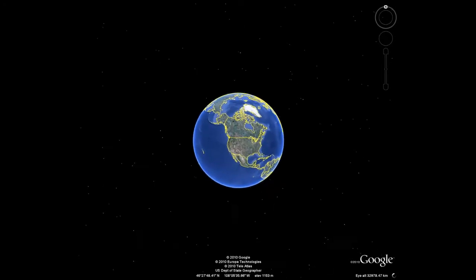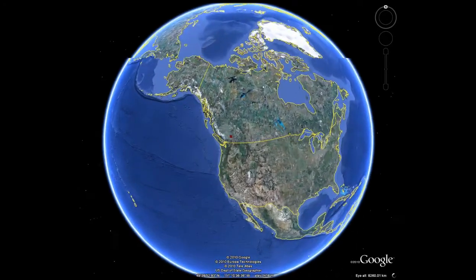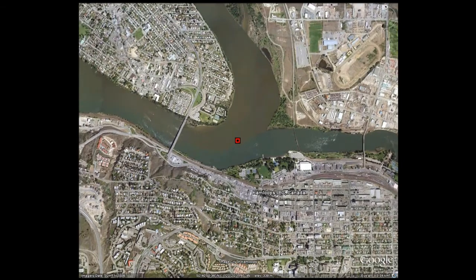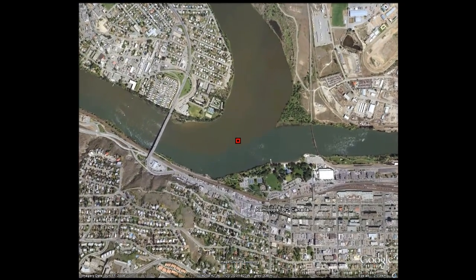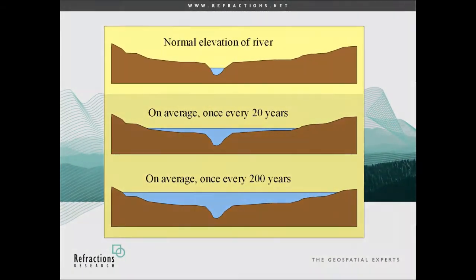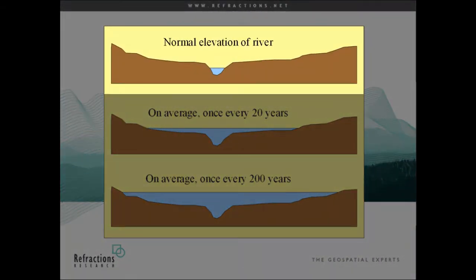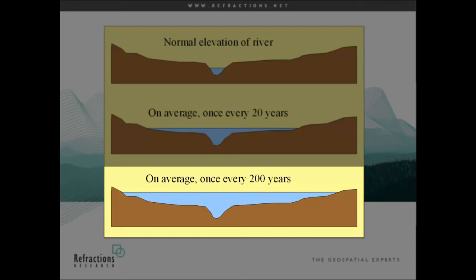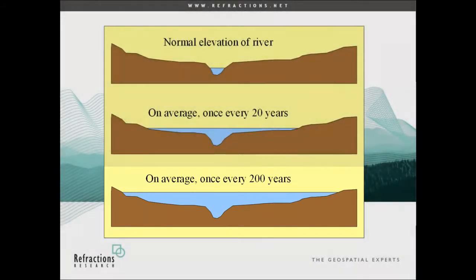Kamloops is a town of about 95,000 people situated at the intersection of two major rivers in south-central British Columbia. Kamloops has much to offer as a place to live, but from time to time it does experience flooding. As background to Kevin's live demo, let's consider how flooding is assessed. The top diagram shows a river in its normal state, contained within its banks. When flooding occurs, its extent is measured, and over a period of years we can create a statistical picture. The middle diagram shows the maximum extent of flooding on average expected during any arbitrary 20-year period, while the bottom diagram shows the same for an extreme 200-year flood event.